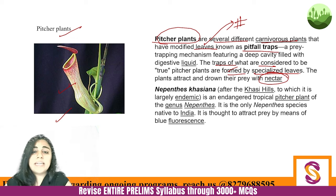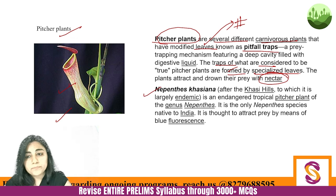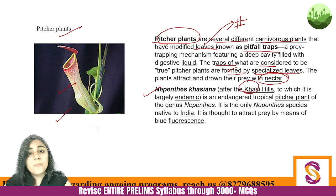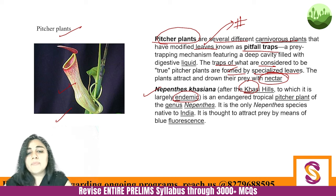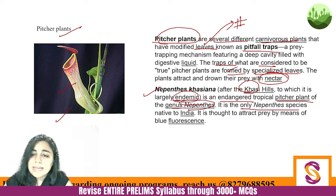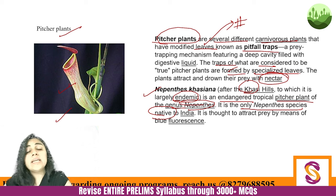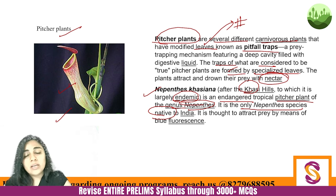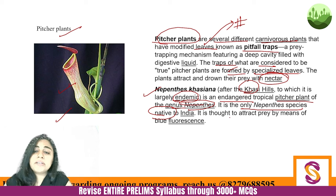Within pitcher plants, there is a specific one called Nepenthes khasiana. The term 'khasi' refers to the Khasi Hills of Meghalaya — so it is endemic to the Khasi Hills of Meghalaya. It is an endangered tropical pitcher plant of the genus Nepenthes and is the only Nepenthes species native to India. It is thought to attract prey by means of blue fluorescence.